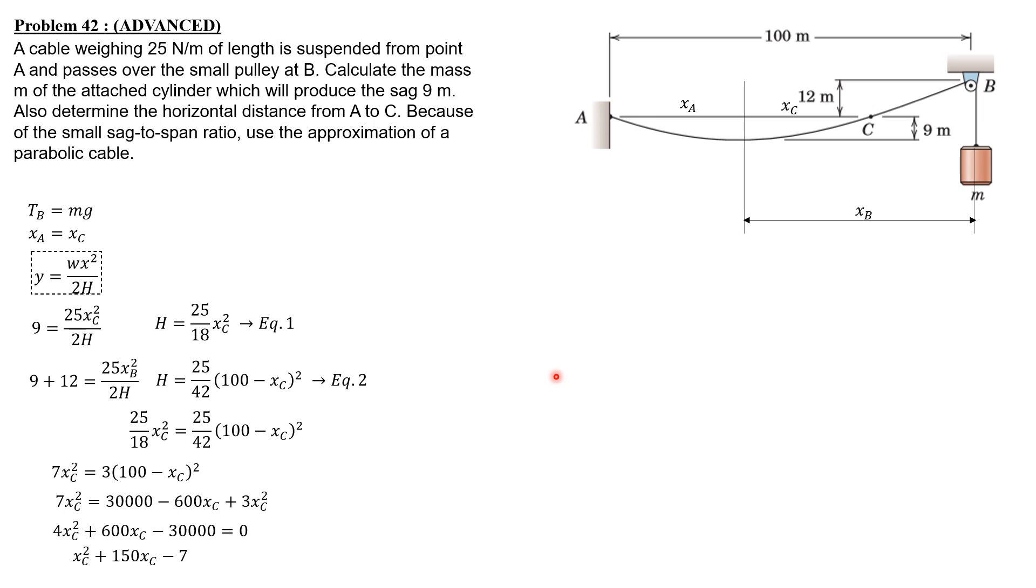Using the quadratic formula, X_C equals negative 150 plus or minus square root of 150 squared minus 4 times 1 times negative 7500, all over 2 times 1. So X_C is 39.56 meters.